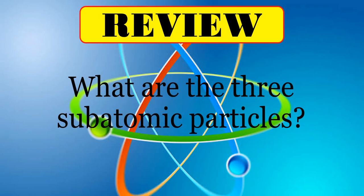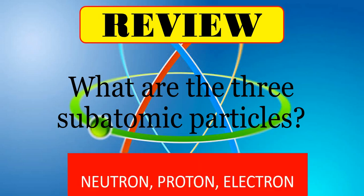What are the three atomic particles? The correct answers are neutron, proton, and electron. The symbol for neutron is lowercase n to the power of zero. Proton is lowercase p to the power of positive, or p-plus. The electron is lowercase e to the power of negative, so e-negative.